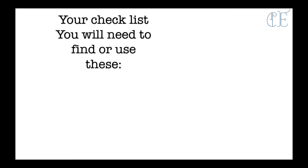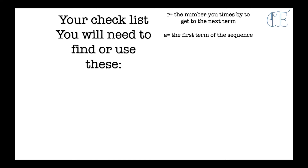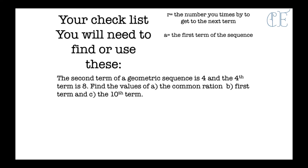Your checklist: you will need to find or use r, which is the common ratio — the number you times by to get to the next term — and a, the first term in the sequence. Here's an example question: the second term of a geometric sequence is 4 and the fourth term is 8. Find: a) the common ratio, b) the first term, and c) the tenth term.